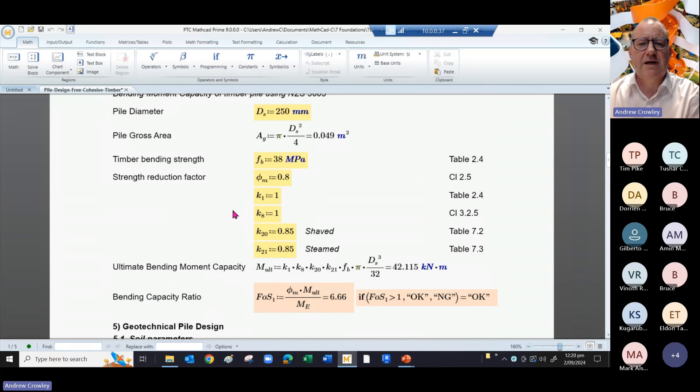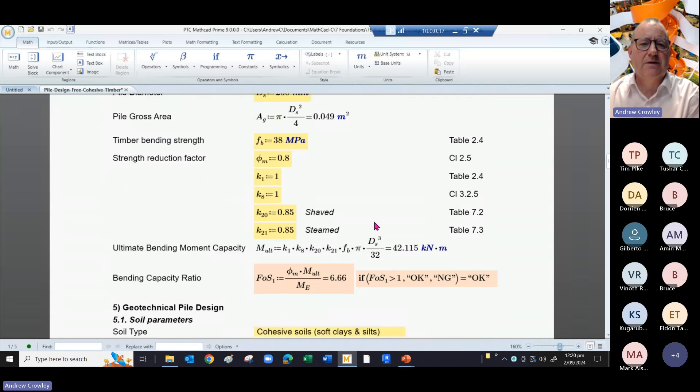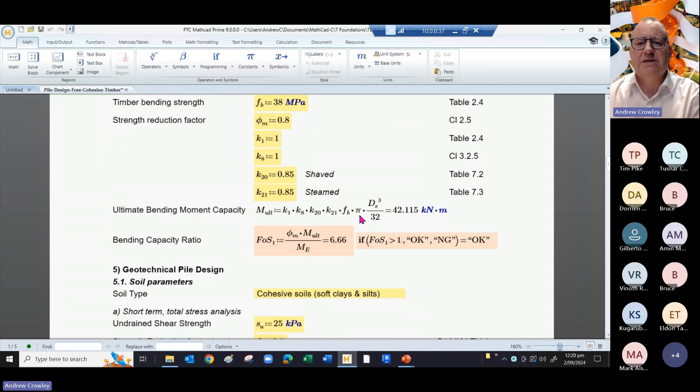We've got some parameters related to timber pole piles. We're using k1 and k8 as 1, and k20 and k21 as 0.85. That gives us an ultimate bending moment capacity for the pile shaft of 42 kilonewton meters.